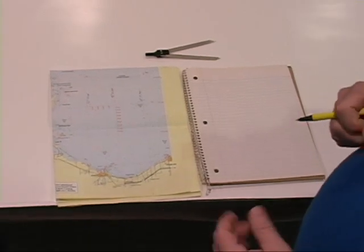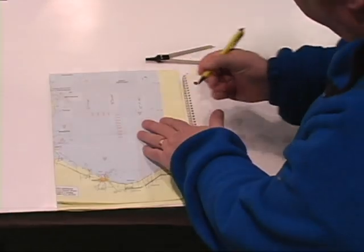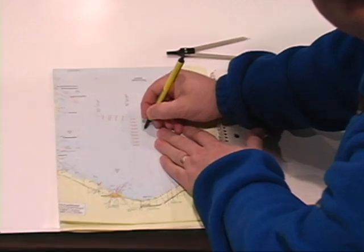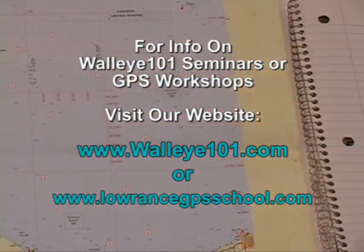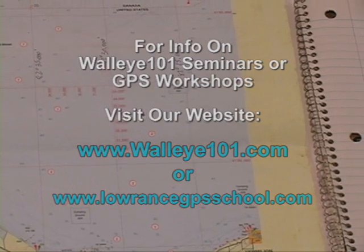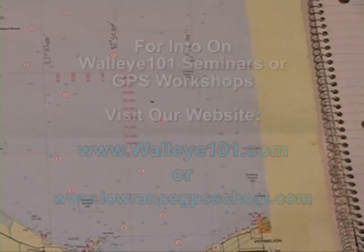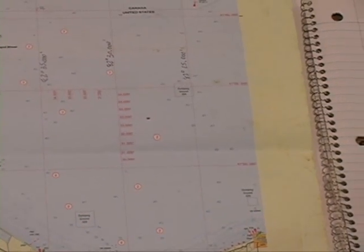So we're going to start real simple and we're going to plot the position of this boat wreck right here. So usually what I do when I'm trying to plot a point is I'll put a pencil point to figure out exactly where it is.